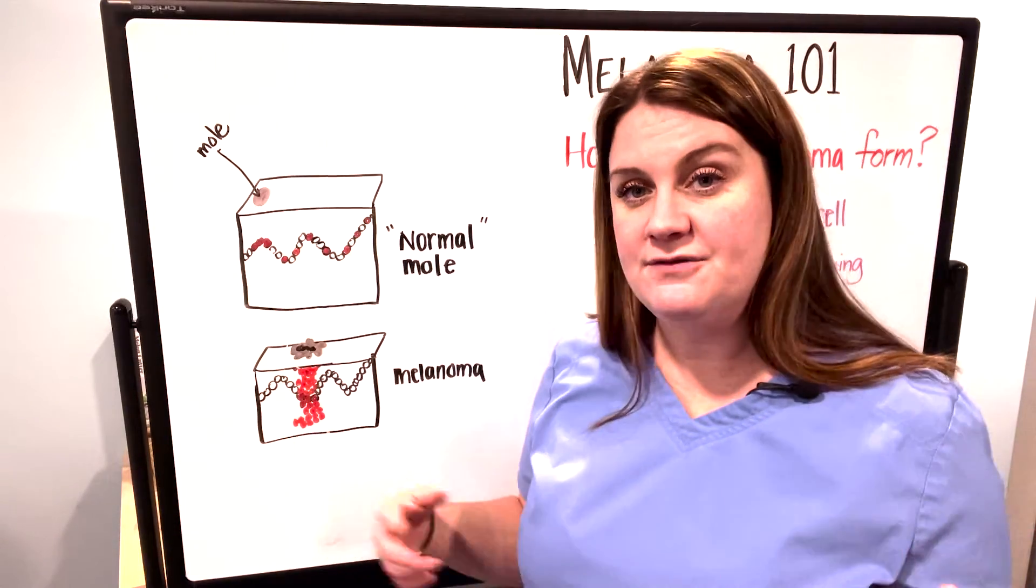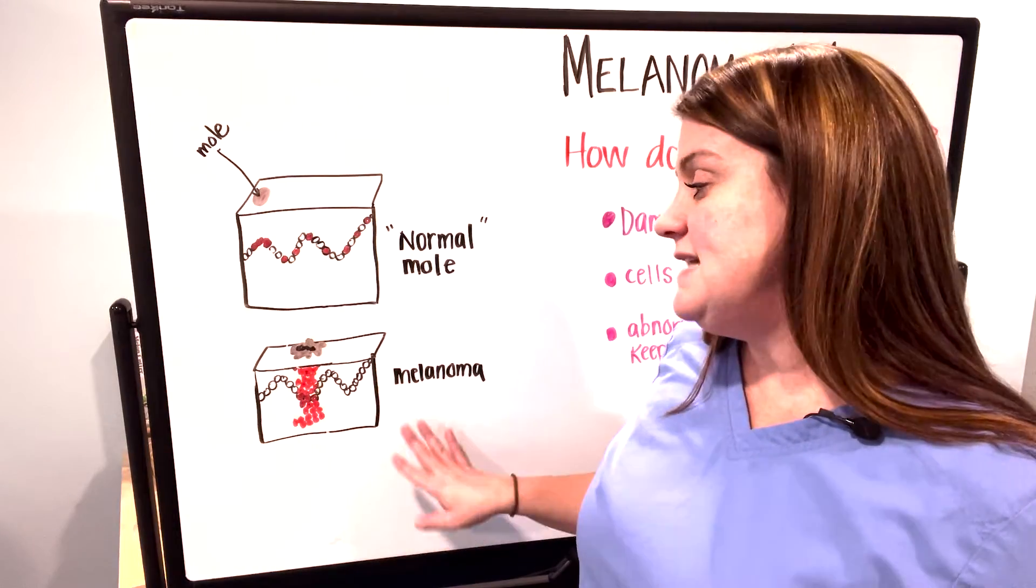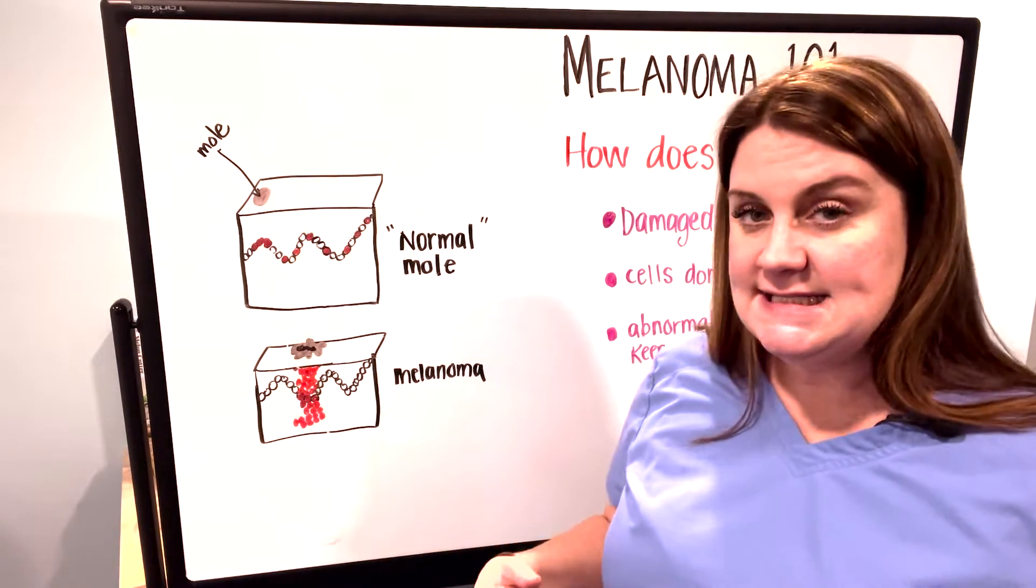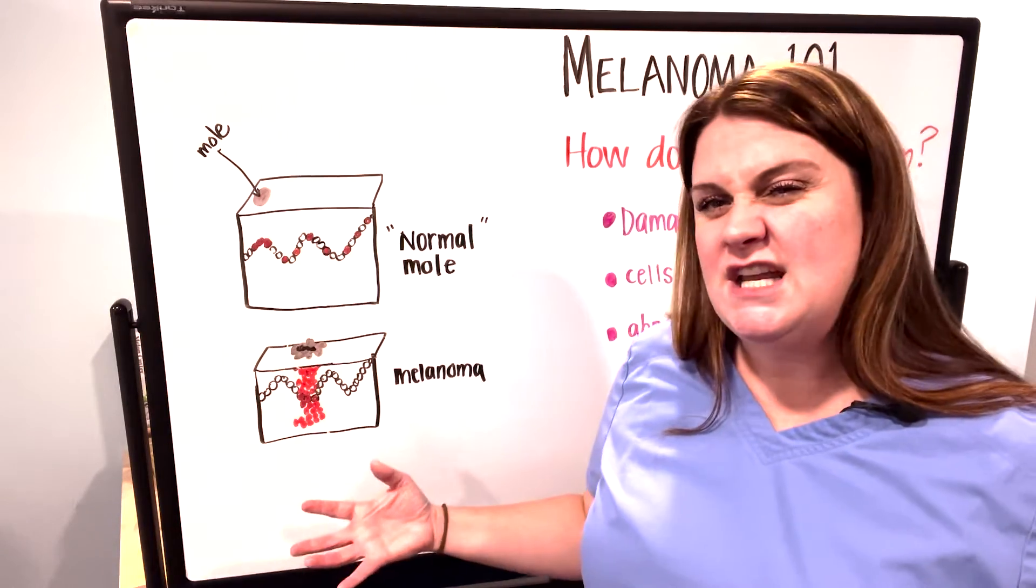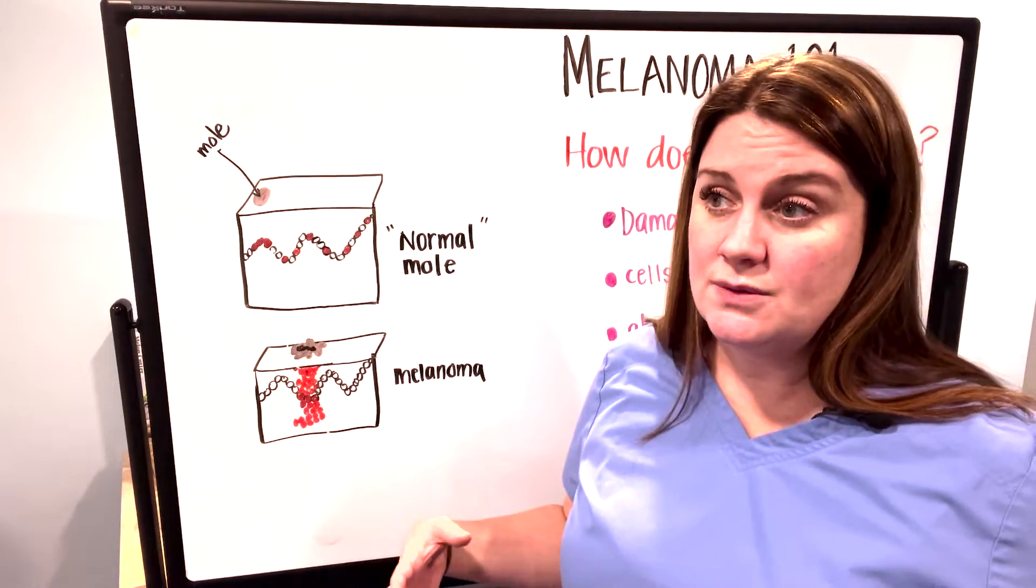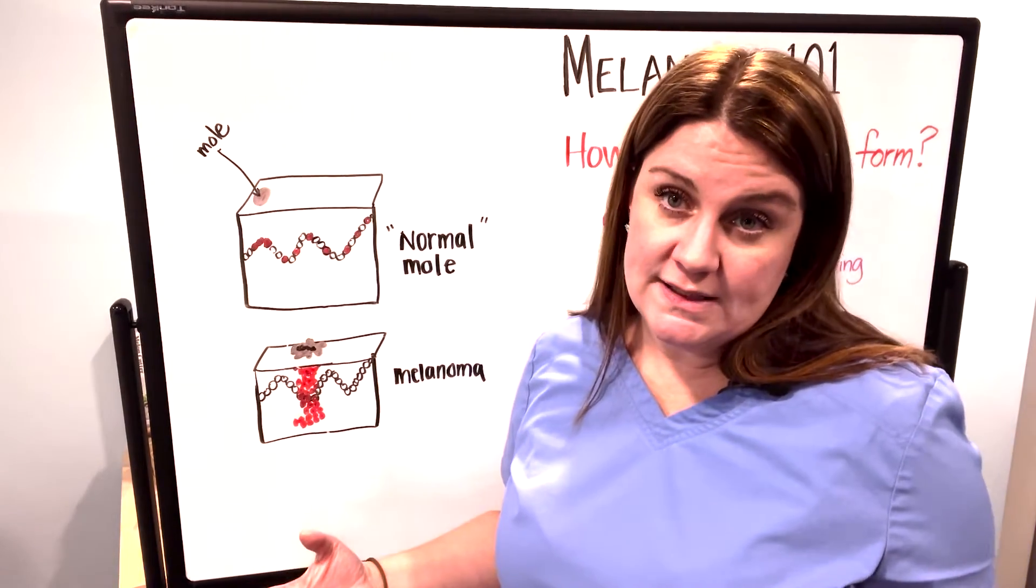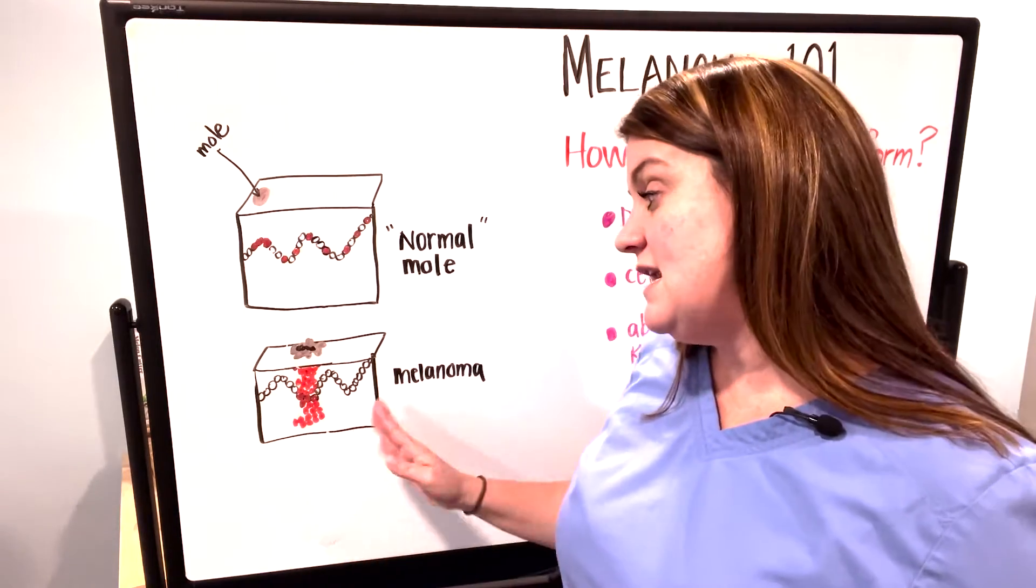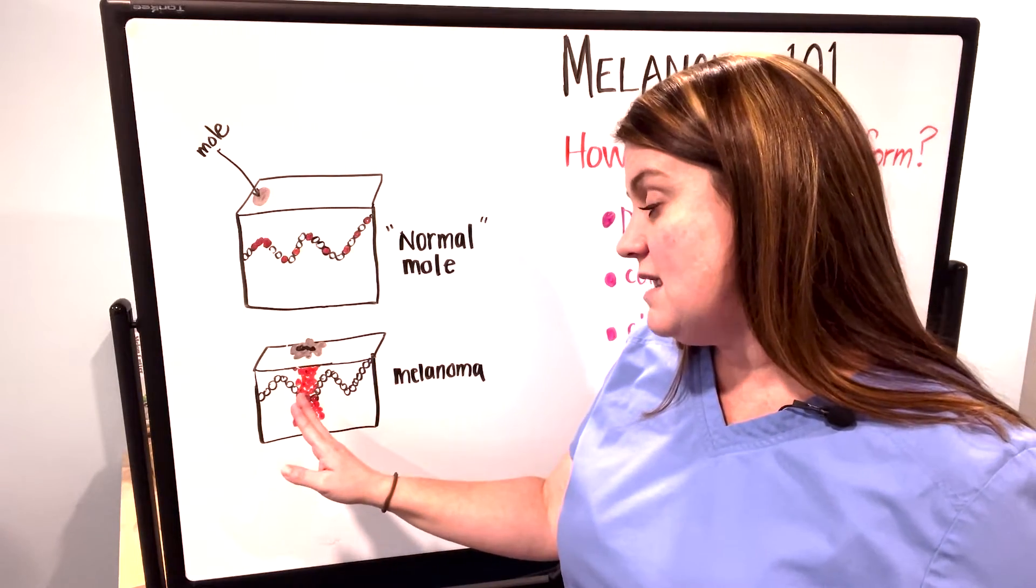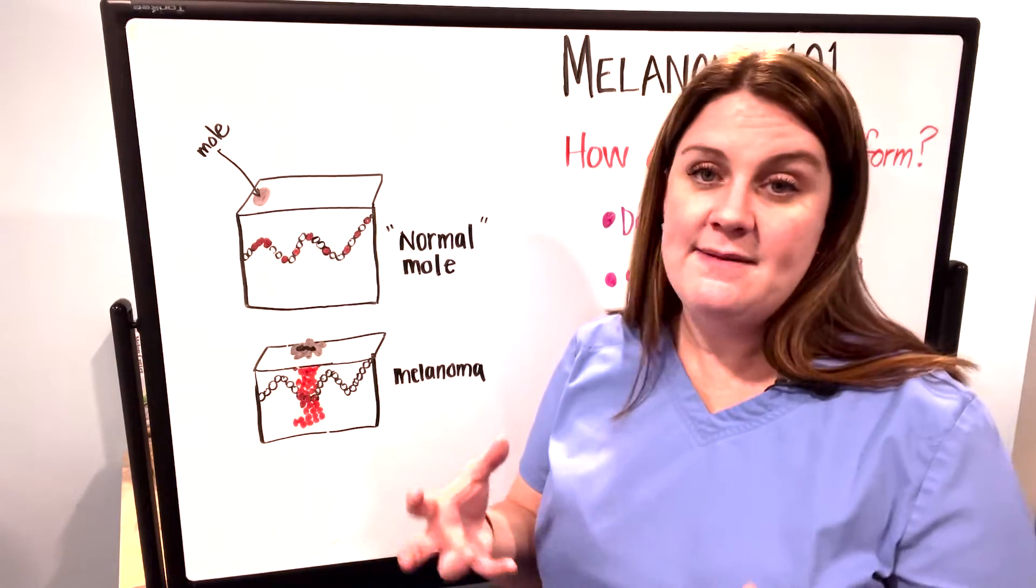The take-home message is that DNA damage causes the cell to function abnormally and not stop growing when it's appropriate, and not have the normal life cycle of a cell. It continues to grow and make copies of itself that are also abnormal, and over time that forms a tumor.